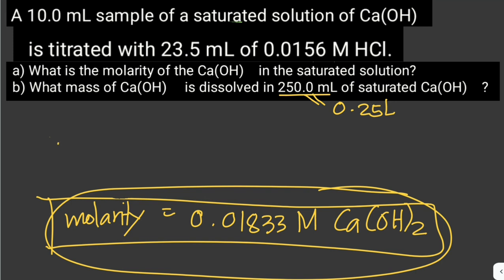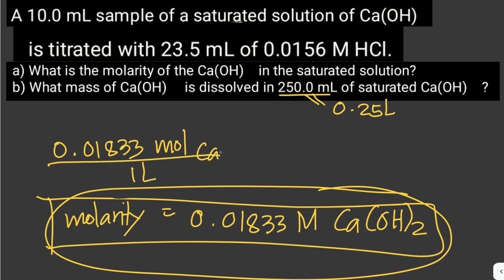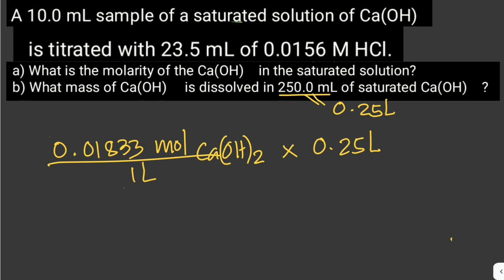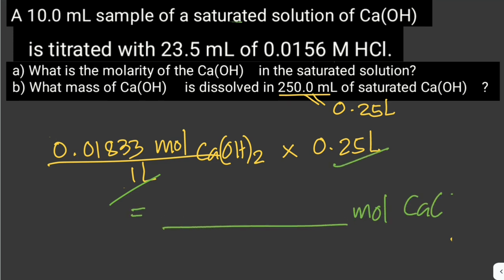So we start with 0.01833 mol per liter of calcium hydroxide and multiply by 0.25 liter. The liter units cancel out, and we are left with the number of moles of calcium hydroxide. This gives us 4.5825 × 10⁻³ moles of calcium hydroxide.